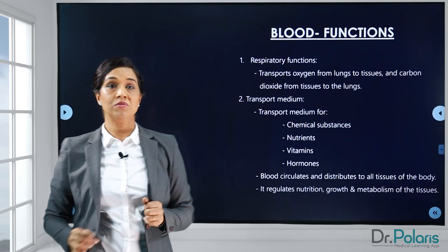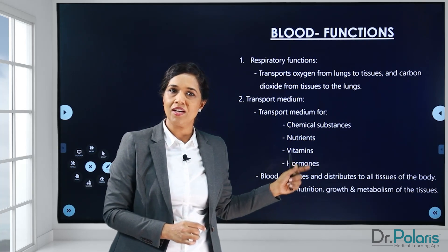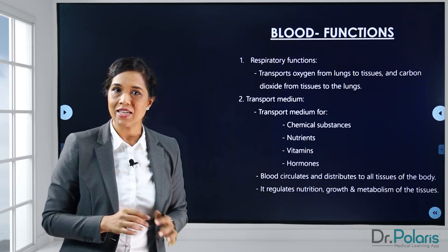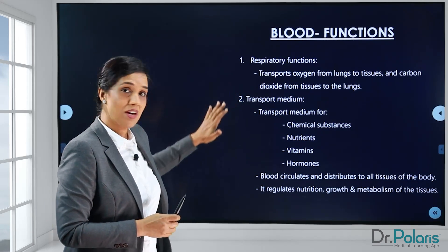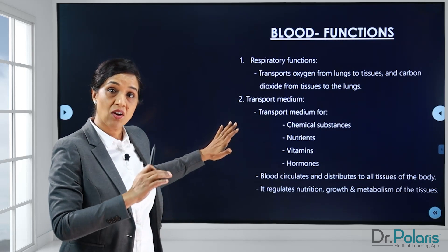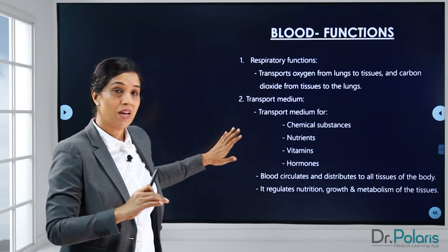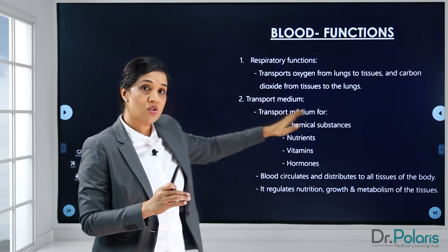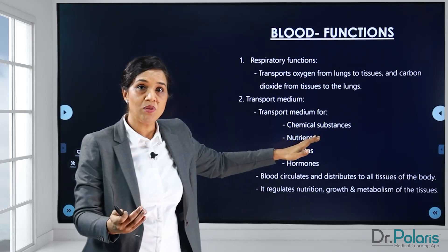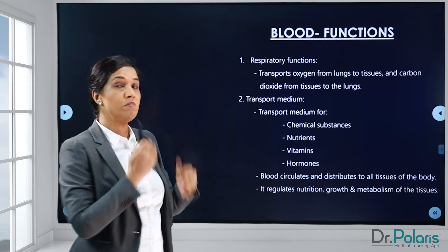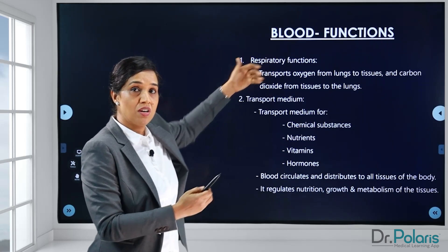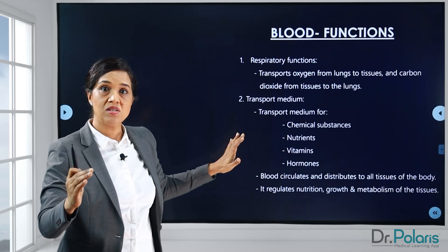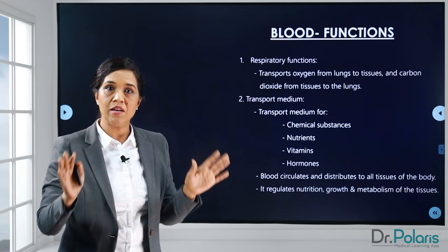Now coming to the functions. The blood functions have been discussed under eight headings, but please keep in mind the functions have been numbered not according to importance. It doesn't mean that the first function — respiratory function — is most important, the second — transport medium — is next, or that the fourth — immunity — follows in that order. All eight functions listed here are equally important.